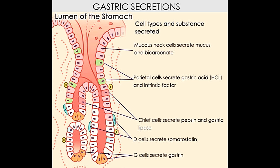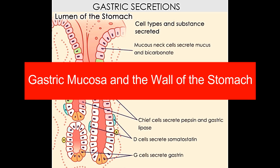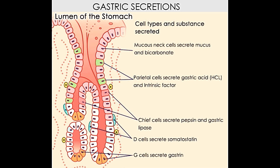On the surface of the mucosa, the simple columnar epithelial cells — or goblet cells — secrete mucus. The mucosa also contains tubule-shaped gastric glands that secrete gastric juices and mucus. Gastric pits are narrow channels in the stomach that act as openings for the gastric glands and are also lined by surface mucus cells. Gastric juices are secreted by special types of exocrine glands, including neck mucus cells, chief cells, and parietal cells. The neck mucus cells secrete mucus with a more neutral pH than that secreted by the cells at the surface of the stomach lining.